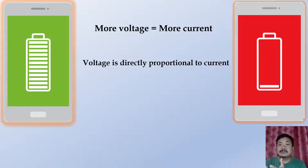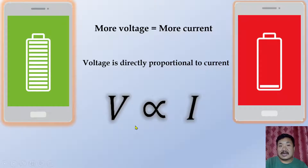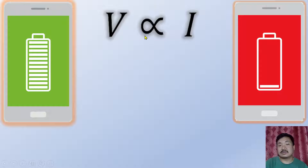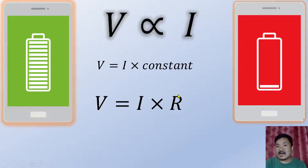We write V proportional to I, where the symbol '∝' is the proportionality symbol. When we remove the proportionality symbol, we multiply the right-hand side by a constant. So V equals I into constant, and this constant is R. So V = IR, where R is the electrical resistance, which I am going to explain.